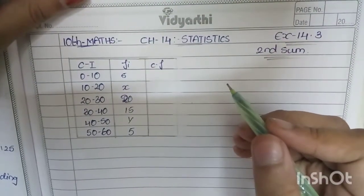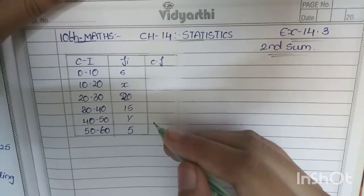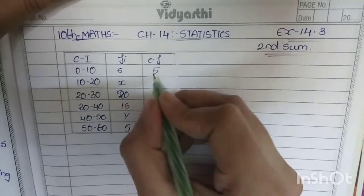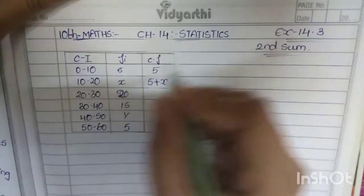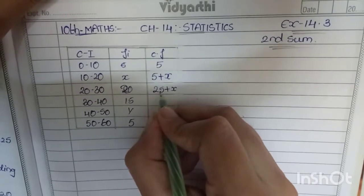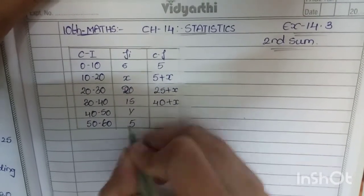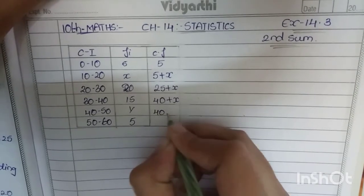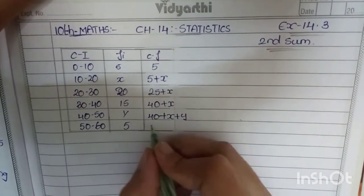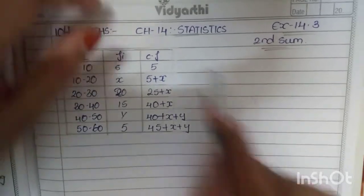I have copied the same sum here. For finding the median, it is very important to find the cumulative frequency. The first value is written as the frequency itself, that is 5. From the second one we add: 5 plus x. Next is 5 plus x plus 20, which is 25 plus x. Then 25 plus 15 plus x equals 40 plus x. Next is 40 plus x plus y. The last one is 40 plus x plus y plus 5, which equals 45 plus x plus y.